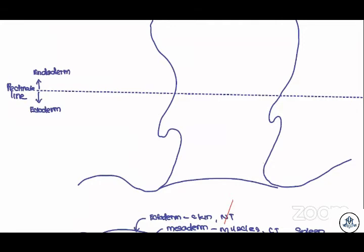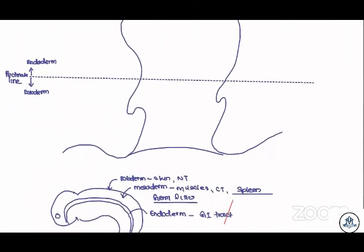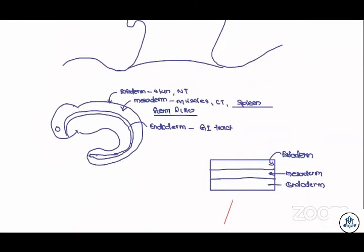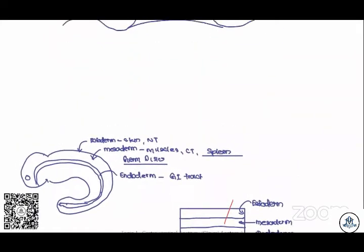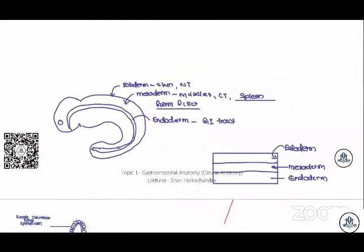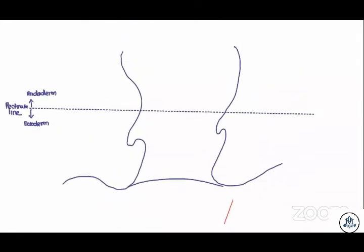I had to go all the way through that to explain that one tiny concept — but it's fine. The key point is: endoderm above and ectoderm below the pectinate line.